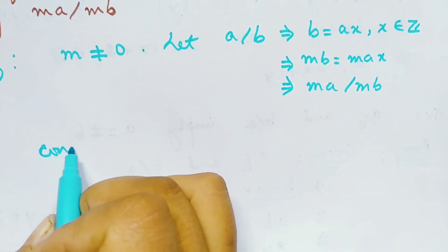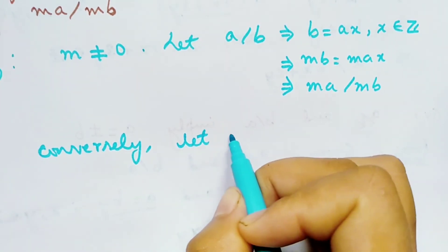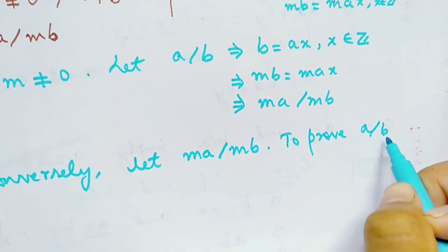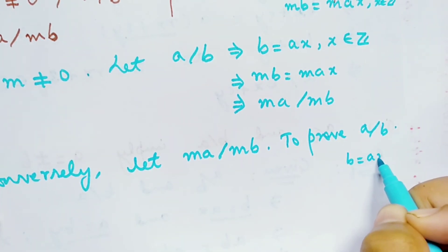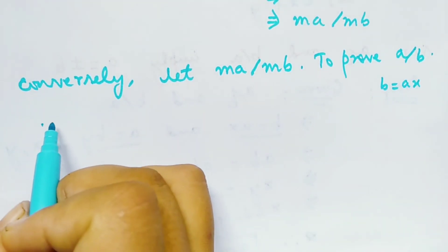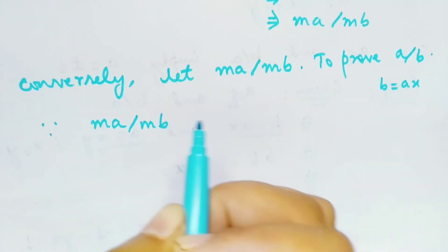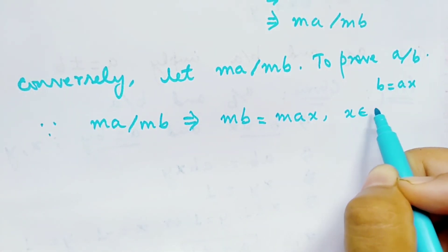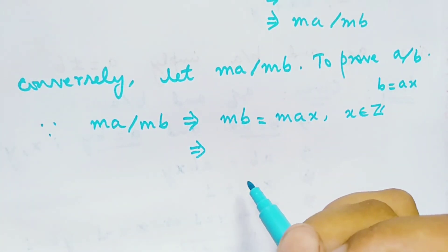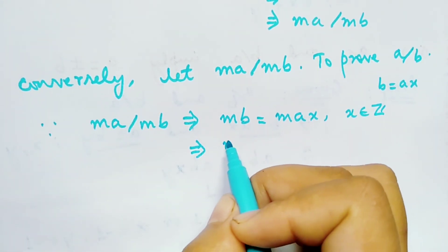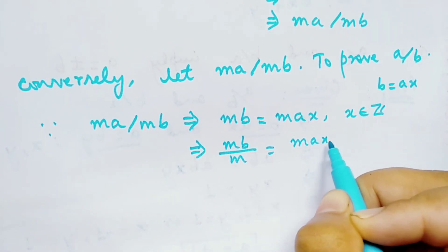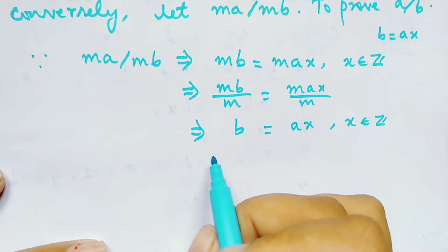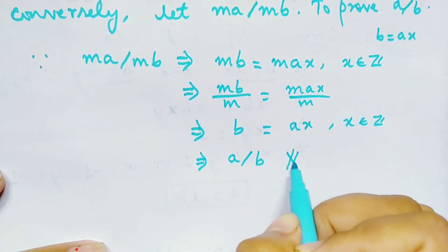Conversely, let ma divide mb. We have to prove that a divides b. Since ma divides mb, we can write mb equals ma times some integer x, where x is an integer. Dividing both sides by m — which is valid since m is not equal to 0 — we get b equals a times x. Since x is an integer, this implies that a divides b. Hence proved.